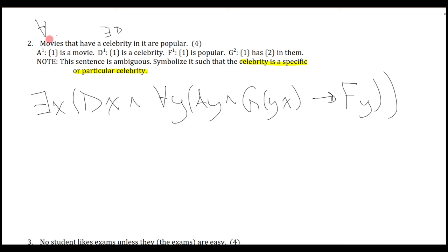Notice that the existential X runs over the entire scope here, otherwise it doesn't really make sense. So there is a celebrity, and for any movie that the celebrity is in, then it's popular. That's how we do the ambiguous case, we just need to pay attention to quantifier order. This one doesn't have me write out an English sentence to clarify, because it already clarifies it for me.